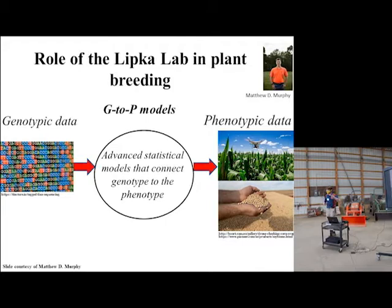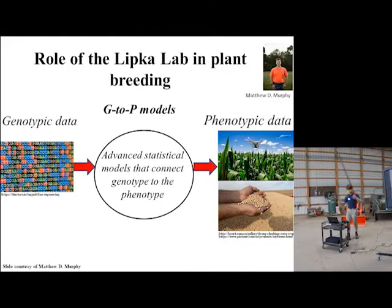You can measure the whole genome of a crop species. And additionally, a whole lot of investment is being put into phenotypic data — like flying drones over a field, high-throughput phenotyping data and stuff like that. So what I see my lab as fitting into this whole mix is we do statistical G-to-P models, genotype-to-phenotype models.